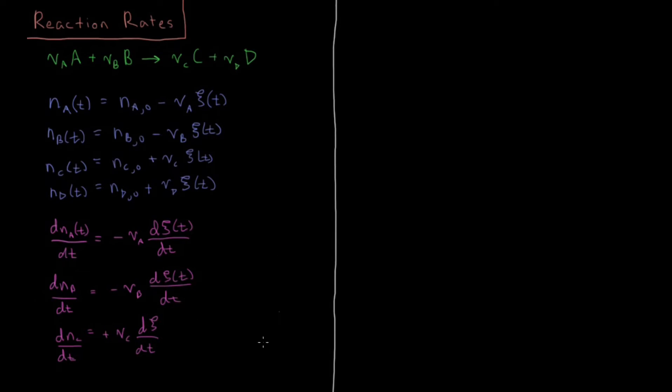And I'm just going to leave off the parentheses t there just because I think we know which functions do and do not depend on time by now. So our last value, plus nu D dC/dt. Okay, so these are all the rates of change of the number of moles of each chemical species, of all the reactants and products.